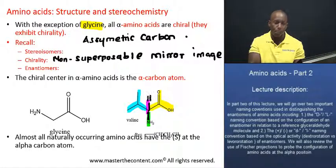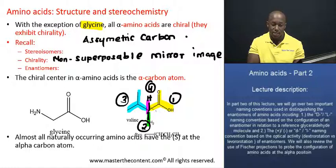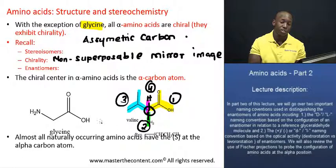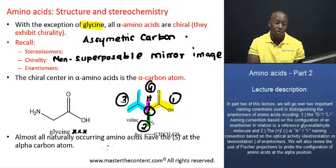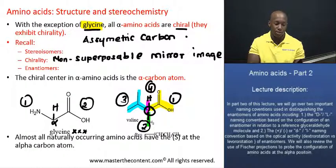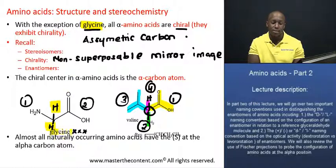So we have one, two, three, and four groups attached to that centrally located chiral carbon. All these groups are different from each other, and for that reason we call that a chiral center, making this a chiral molecule. Now, directing your attention to the left-hand side of the screen where we have glycine — with the exception of glycine, all alpha amino acids are chiral. The alpha carbon of glycine is bonded to two hydrogens that are not included in the structural representation, but because it has two identical groups, glycine is not a chiral molecule.